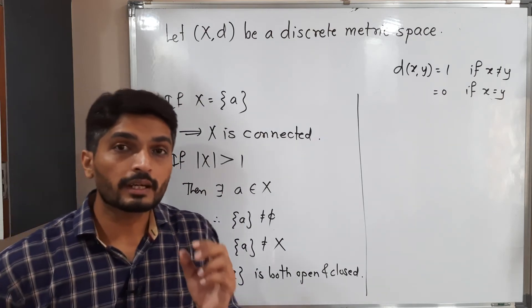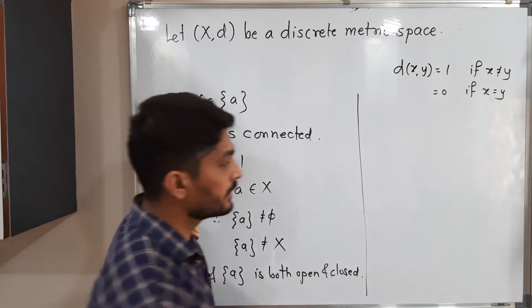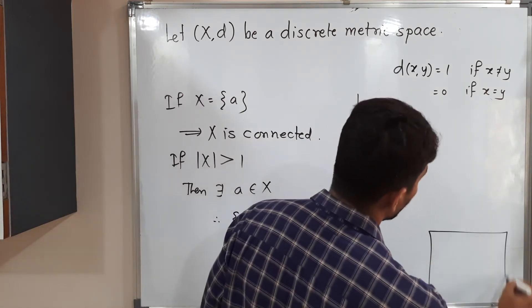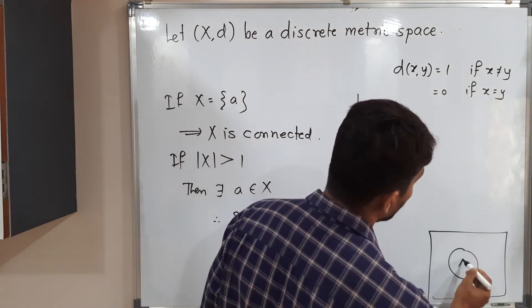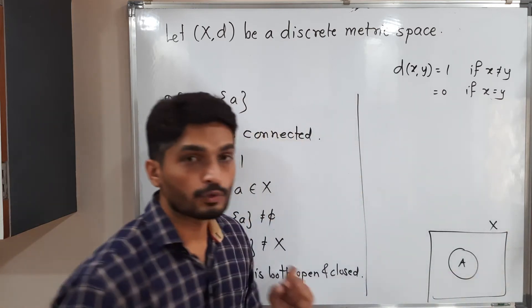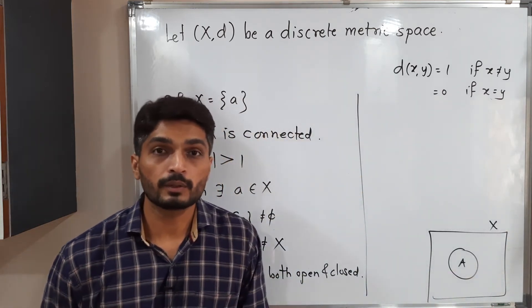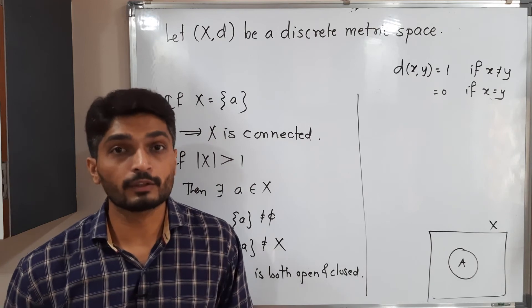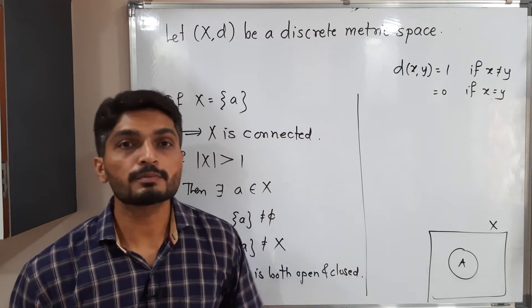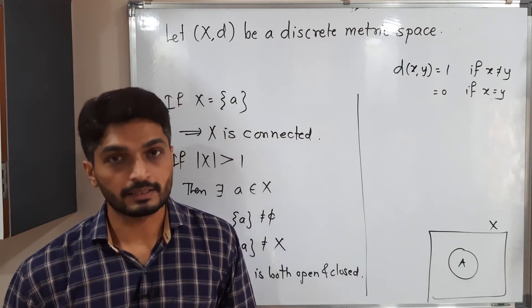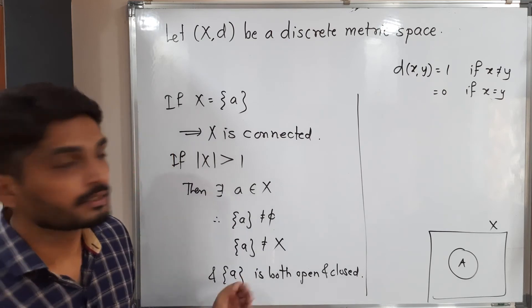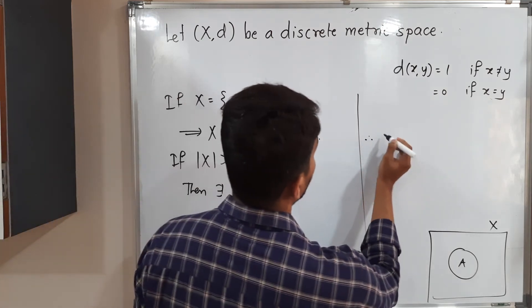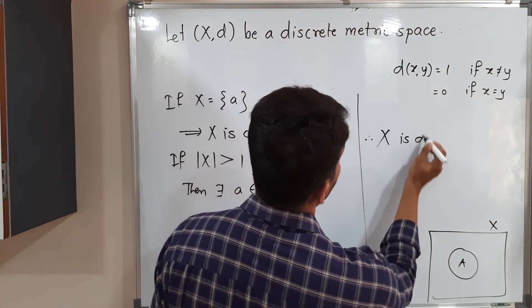So what do we get? We get one set. We have already studied that if it is possible to find a subset of X which is non-empty, not equal to X, and which is both open and closed, then we say that metric space X is disconnected. Here we get such a set. Therefore, we can declare that X is disconnected.